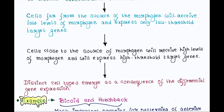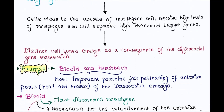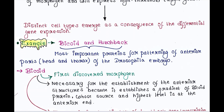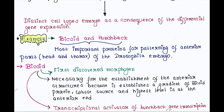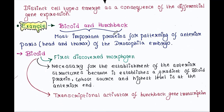Distinct cell types emerge as a consequence of differential gene expression. Now we will see a classic example of the morphogen. Bicoid and hunchback are the two most important proteins for patterning of the anterior parts of the Drosophila embryo — meaning the head and thorax.